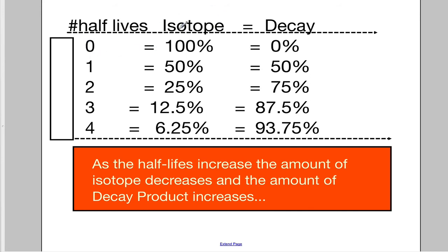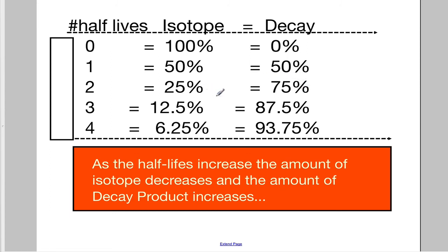In numbers: at zero half-lives, you have 100% of your isotope remaining and 0% has decayed. After one half-life, it's 50-50. After two, three, four half-lives, these numbers keep getting cut in half. The decayed percentages are whatever it takes to reach 100 — so 50 plus 50 is 100, 25 plus 75 is 100, 12.5 plus 87.5 is 100 — because you always need all the atoms present. The atoms are not disappearing; they're just changing.